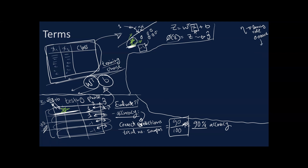How would we choose an optimal value of eta? Parameters like this — general parameters that govern the behavior of our classifier model — are called hyperparameters. We are uncertain about the exact value and need to find the optimal one.